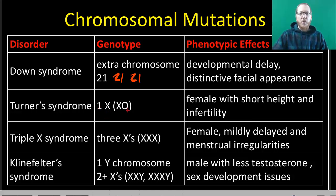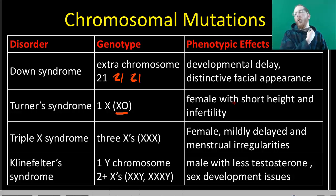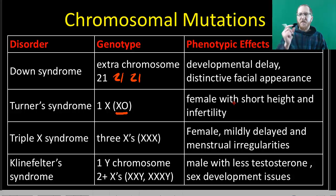Turner syndrome is where you only have one X chromosome with no second X or Y — often written as X-0. These individuals will be female and tend to be shorter, sometimes with webbing around the neck, and in some cases can have very mild mental retardation and infertility.